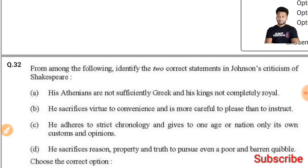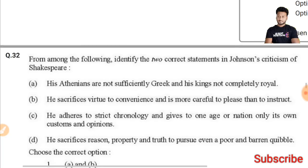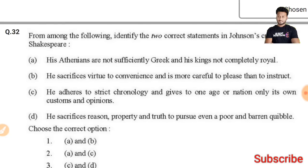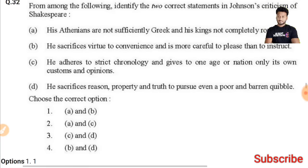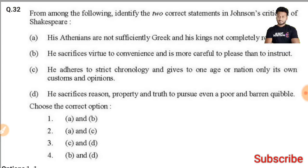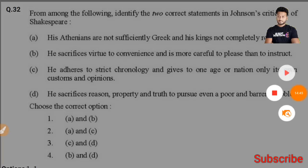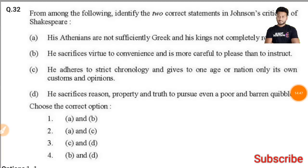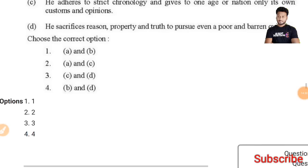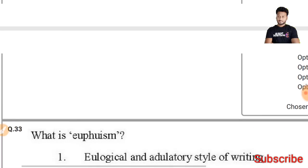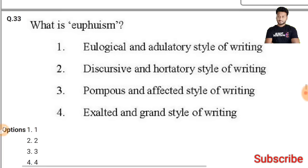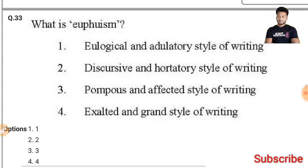Question 32: From among the following, identify the two correct statements in Johnson's criticism of Shakespeare. I am not sure about this question's exact answer, so we will leave this one and proceed to the next.